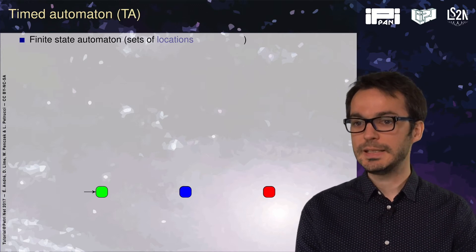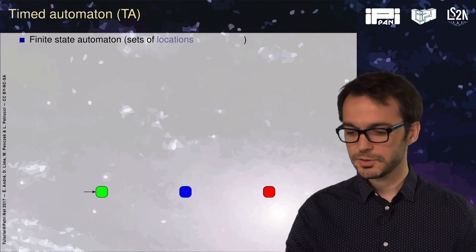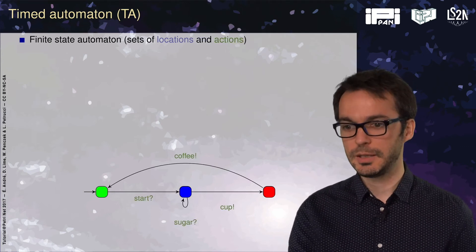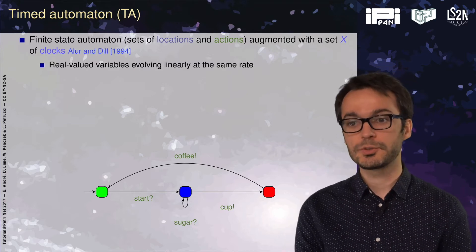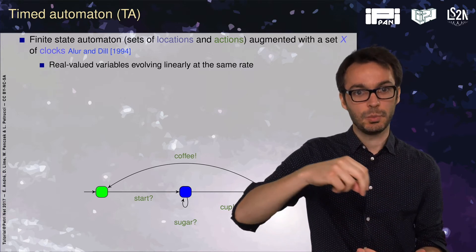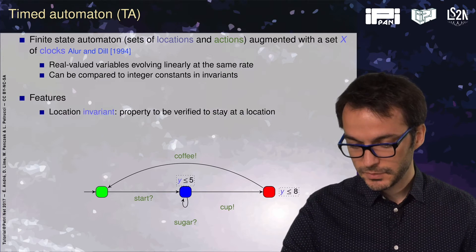A timed automaton is a finite state automaton, that is a set of locations, a set of actions with transition labels, and we have what we call clocks. Clocks are real-valued variables that evolve linearly with time all at the same rate.